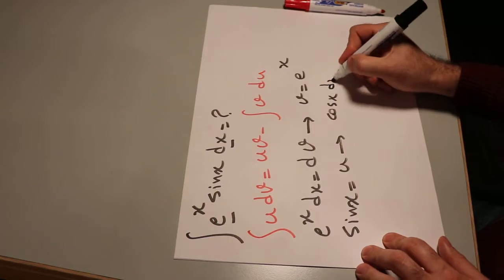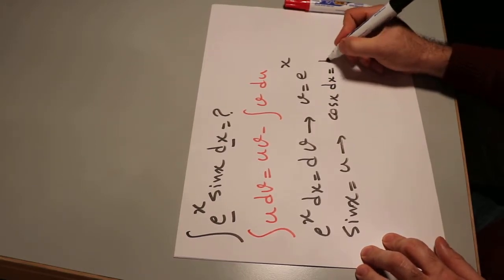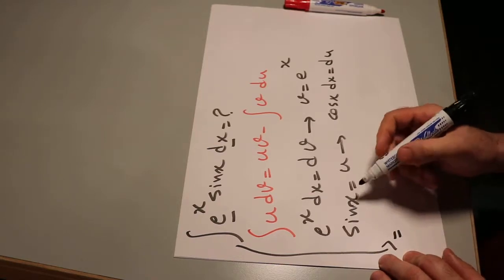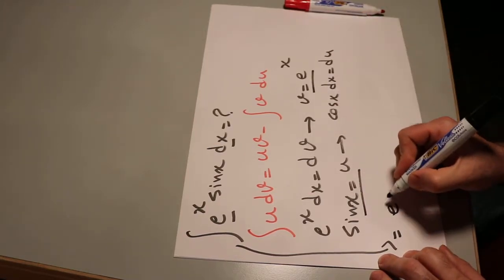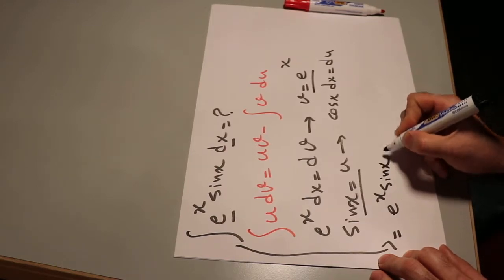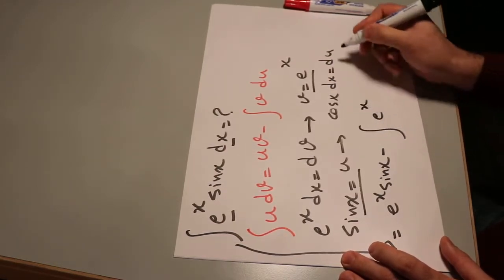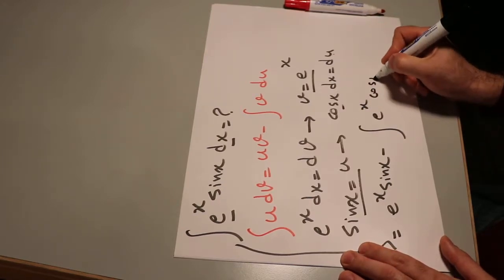cos x dx will be du. So now you can rewrite this integral as u times v, that will be e^x sin x minus integral of v, that is e^x times du, which is cos x dx.